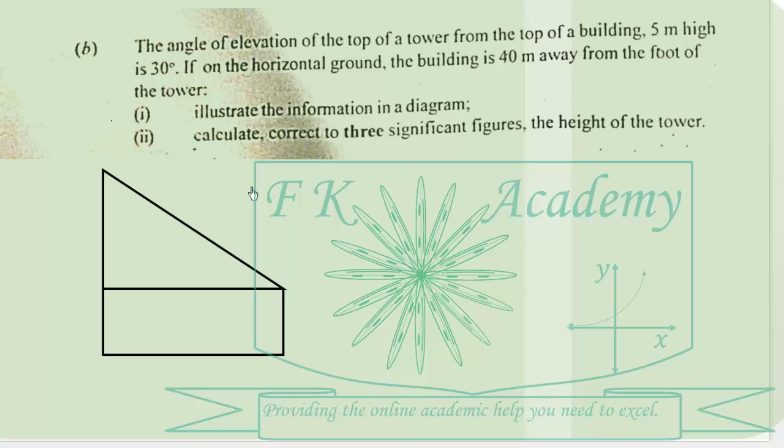So we can illustrate this information like this. So this is the building. The top of the building is B. The top of the tower is T. So it was given in the question that the height of the building is 5 meters.